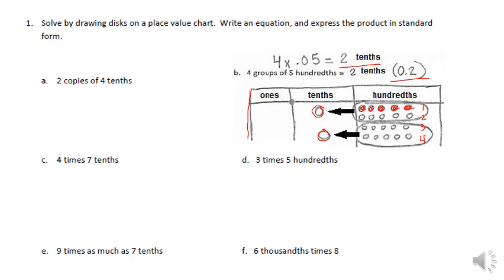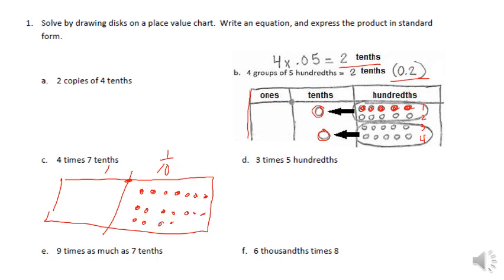Now under C, it says four times seven tenths. So the same thing, if I do my place value chart, and all I'm going to draw is my ones place and my tenths place. It says four times seven tenths. So I'm doing two, three, four, five, six, seven tenths. And I'm doing that four times. Okay. Now that's four groups.